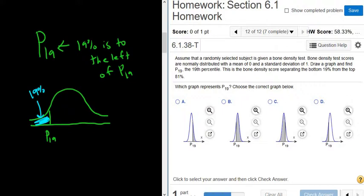So if it was, say, P50, it'd be right in the middle. If it was P80, it'd be over here somewhere, because then 80% would be to the left. So the correct choice should be this one here. Check answer.